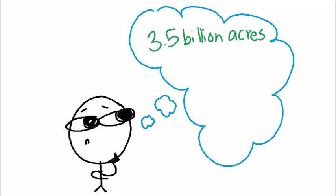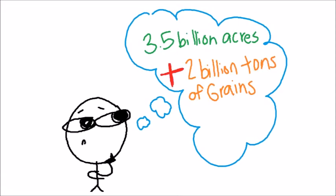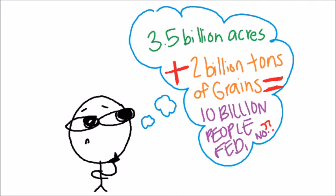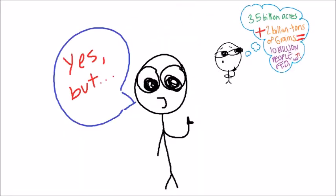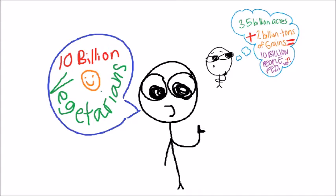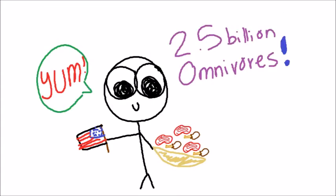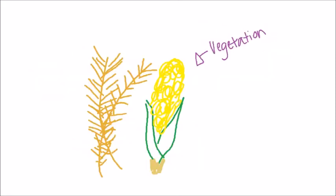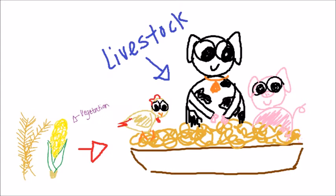But wait, aren't there like 3.5 billion acres of arable land on Earth that can produce 2 billion tons of grains per year and easily feed 10 billion people? Well, yes, but that would feed 10 billion vegetarians. If you consider the typical American diet, the same amount of land would only feed 2.5 billion omnivores because the rest of our vegetation would be dedicated to feeding our livestock.